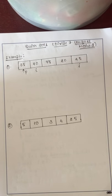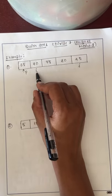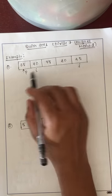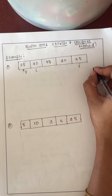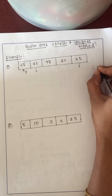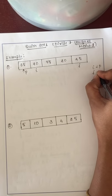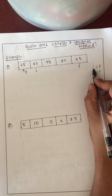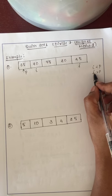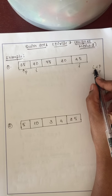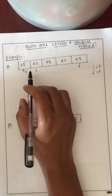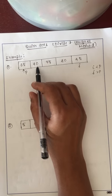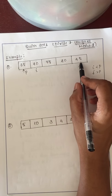The constraint in quicksort is that i must always be less than the pivot element, and j must be greater than the pivot element. Only if this condition is satisfied can we increment i and decrement j. Otherwise, we need to exchange i and j. Now, the pivot element is 65, with i pointing to 40 and j pointing to 45.